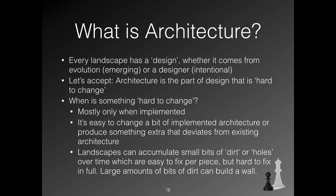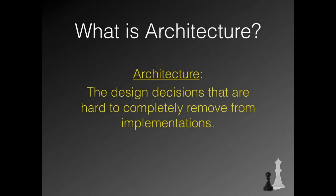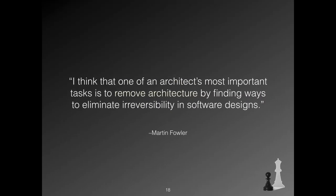So that leads us to the following definition: architecture is the design decisions that are hard to completely remove from implementations. One disadvantage of this definition is that the concept of architecture has become volatile — it depends on the implementation, on what really is there in your landscape. You can actually remove architecture: by making something easy to change, it becomes just a feature, not architecture. In fact, Martin Fowler tells us that the most important task he sees for the architect is to remove architecture. If you add functionality that makes matters easy to adapt, the way you have created that flexibility itself is probably less easy to change — so you see the recursion.